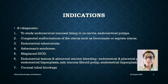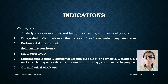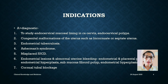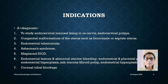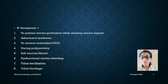Diagnostic uses: Care is taken not to perforate the uterine body. Diagnostic indications include studying endocervical mucosal lining and carcinoma of the cervix, endocervical polyps, congenital malformations of the uterus such as bicornuate or septate uterus, endometrial tuberculosis, Asherman syndrome, misplaced IUCDs, endometrial lesions and abnormal uterine bleeding, endometrial and placental polyps, endometrial hyperplasia, sub-mucous fibroid polyps, and cornual tubal blockus.